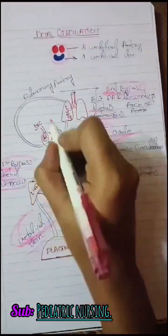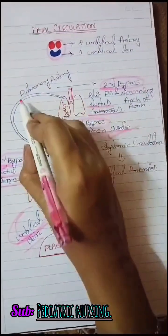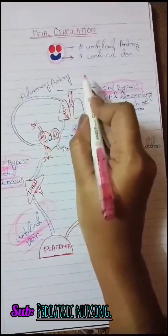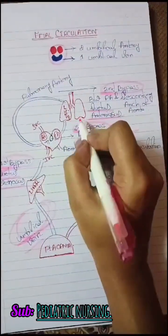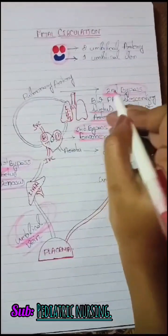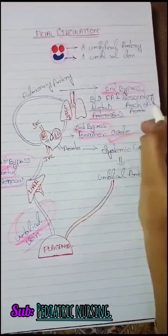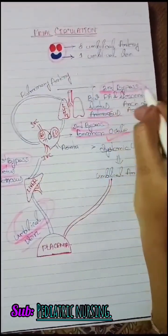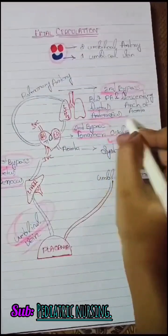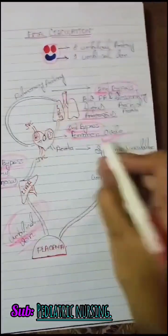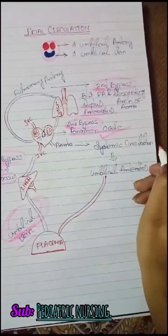The right ventricular blood comes to the lungs of the fetus by the pulmonary artery. But the lungs are very immature. That's why the lungs return the blood back to the descending arch of the aorta via the third bypass called the ductus arteriosus. Then the whole blood comes to the systemic circulation.